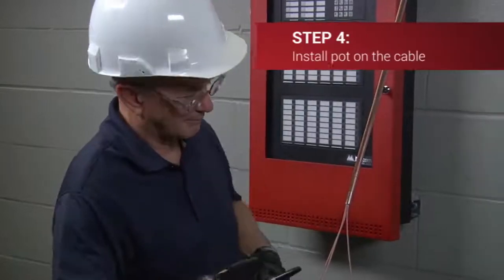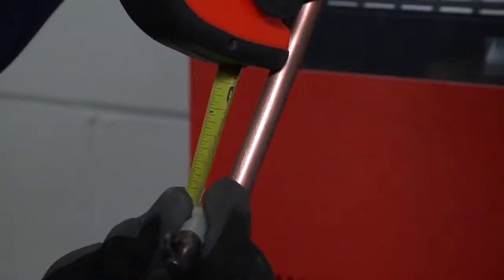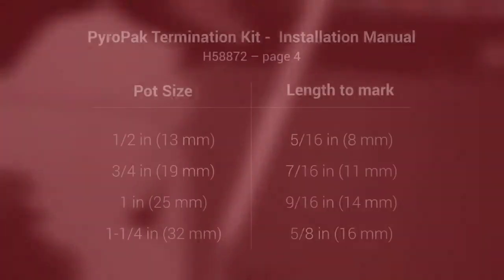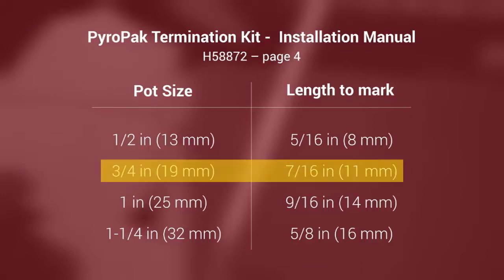Place a mark on the cable back from the end. You will screw the pot onto the sheath so that the back of the pot aligns with the mark. Refer to this table on page 3 of your instructions manual for the correct length to mark on the sheath depending on the pot gland size. The pot gland size we are using in the demonstration is three quarters of an inch, so the cable will be marked at seven sixteenth of an inch, 11 millimeters, back from the end.